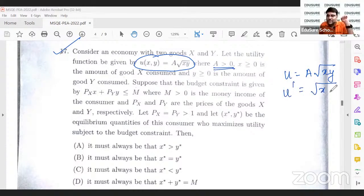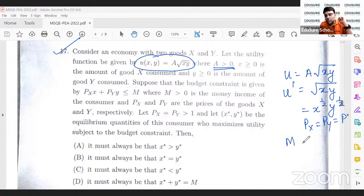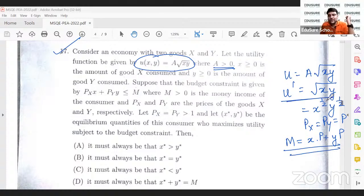So the utility function is a constant root over xy where the constant is positive. Monotonic transformation, this can easily be written as root over xy, or x to the power half into y to the power half. Suppose the budget constraint is given by px x plus py y less than equal to m, where m greater than 0 is the money income of the consumer and px and py are the prices. It's given to us that px is equal to py. Let px is equal to py is equal to p. Budget constraint will be x into p plus y into p. So this is what my budget line is, and this is what my utility function is ultimately.